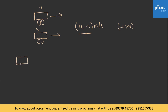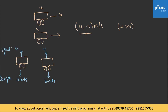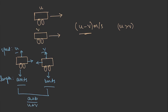Let us assume there are two trains of length A meters and B meters, moving with speeds U and V respectively. If they are moving in opposite directions, the time taken for the two trains to cross each other will be (A + B) divided by (U + V) seconds, since the speeds are added for opposite directions.